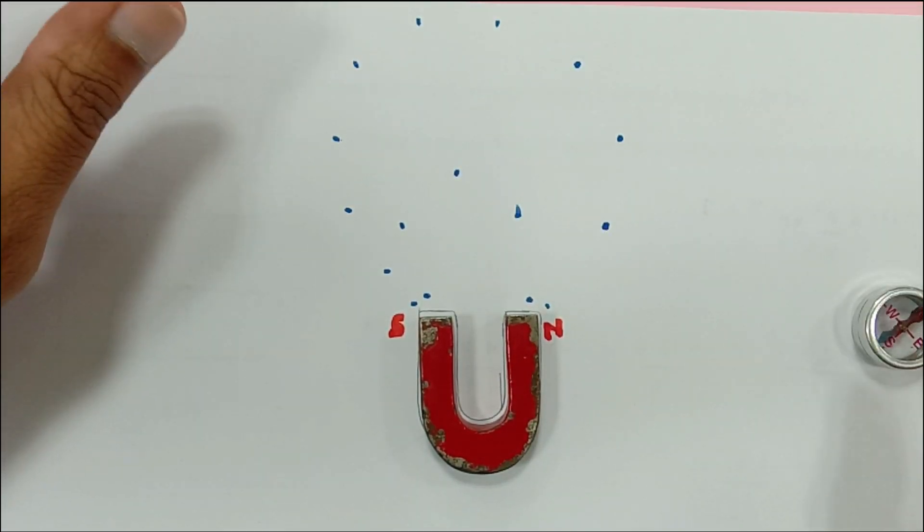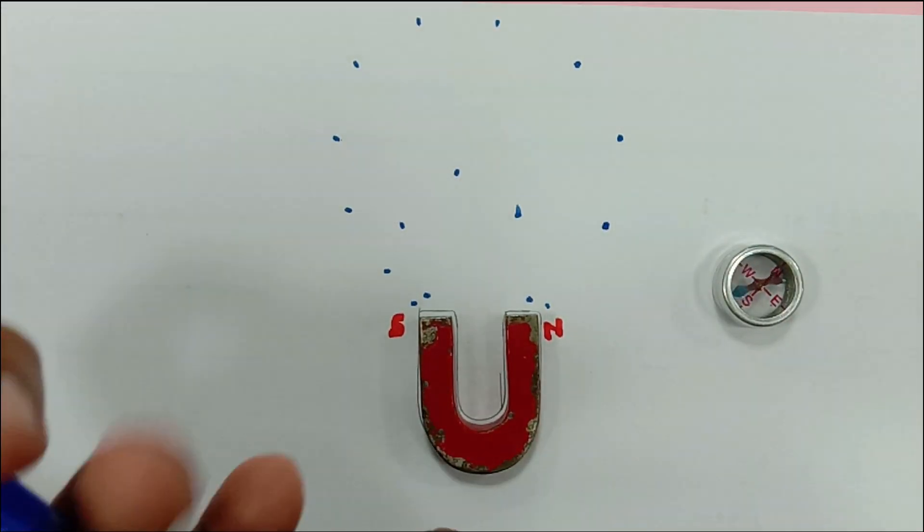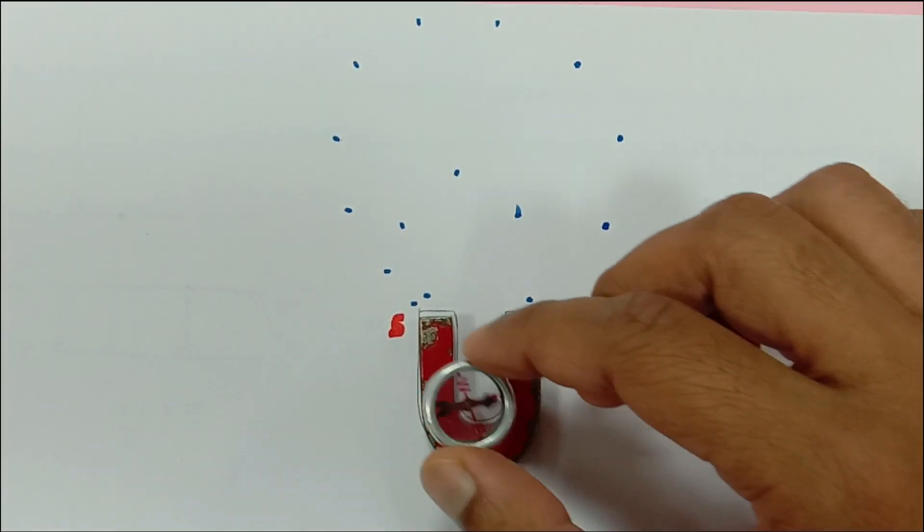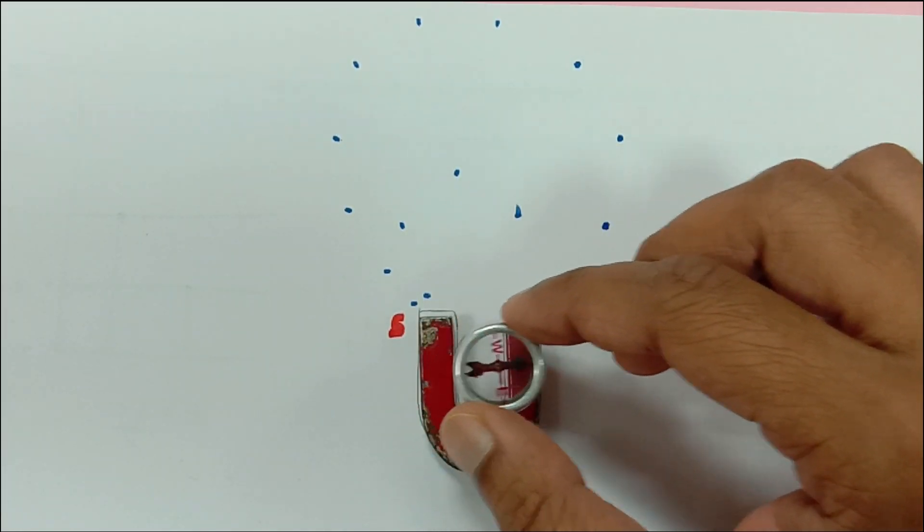Now guys I have a bit of an issue over here, I have a very small U-shaped magnet and so I won't be able to draw the lines in between but I can just show you over here how the lines would be.